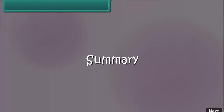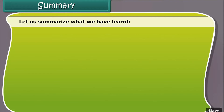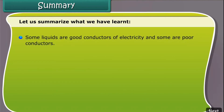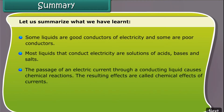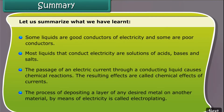Summary: Some liquids are good conductors of electricity and some are poor conductors. Most liquids that conduct electricity are solutions of acids, bases, and salts. The passage of an electric current through a conducting liquid causes chemical reactions; the resulting effects are called chemical effects of currents. The process of depositing a layer of any desired metal on another material by means of electricity is called electroplating.